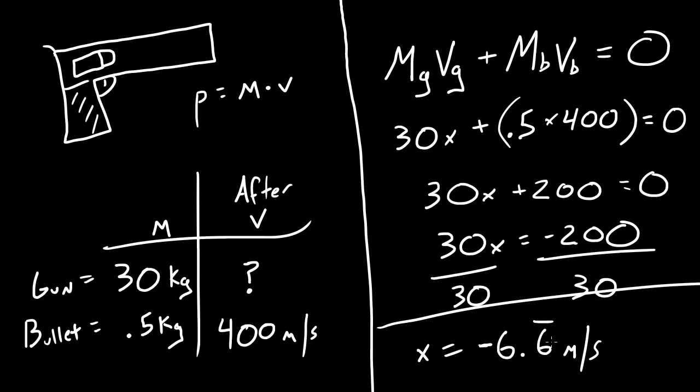And if you guys are saying, 6.6 meters per second, why the heck is this negative right here? The negative symbolizes direction. It basically means it's moving in an opposite direction than the bullet. Since this is positive right here, 400 meters per second, it means that the bullet is going to go this way, and a negative number means the velocity would be this way, opposite directions. That is how you calculate one of the variables when you have the rest of the information, thus proving the law of conservation of momentum.